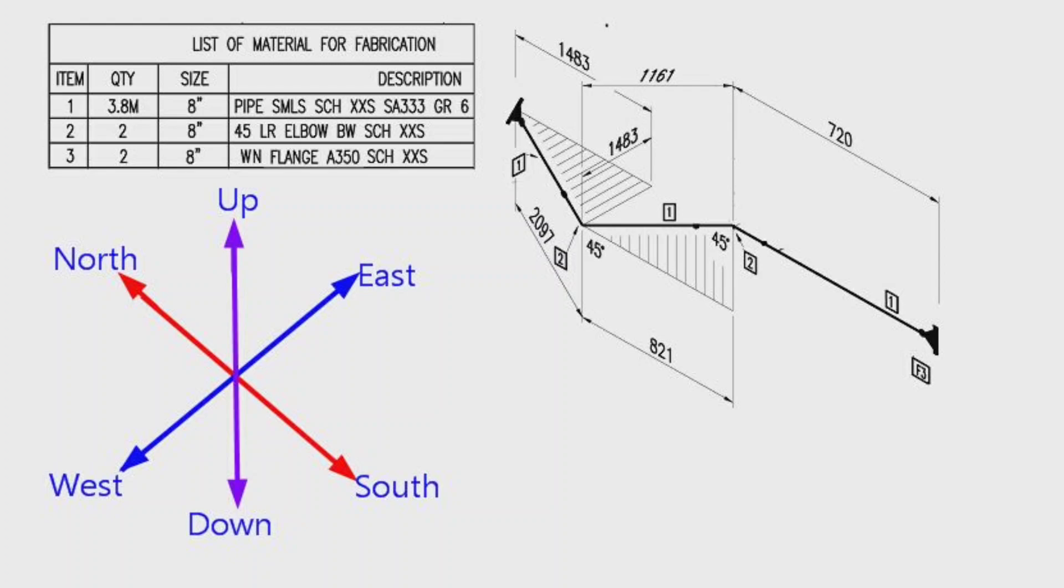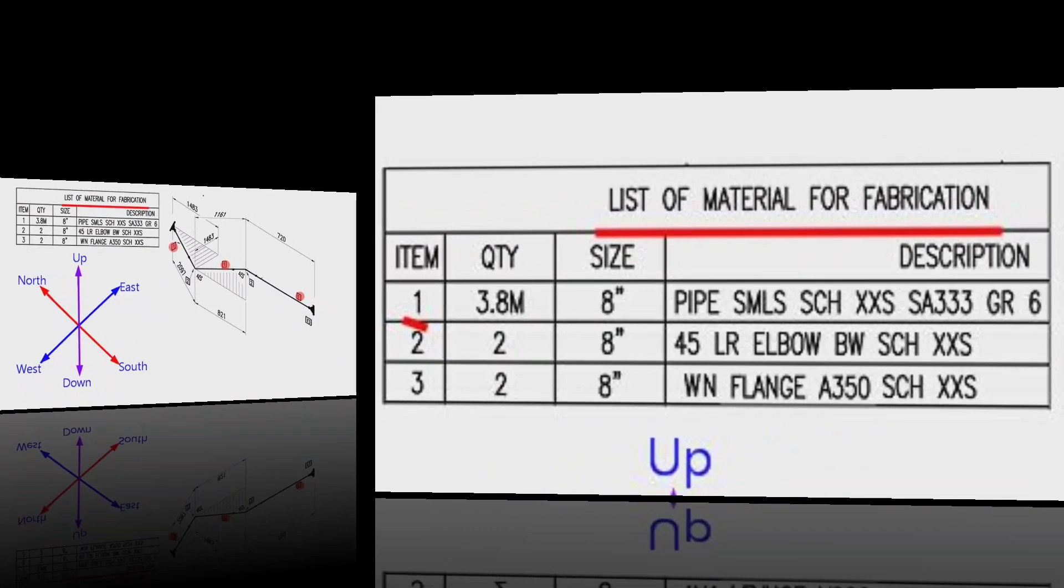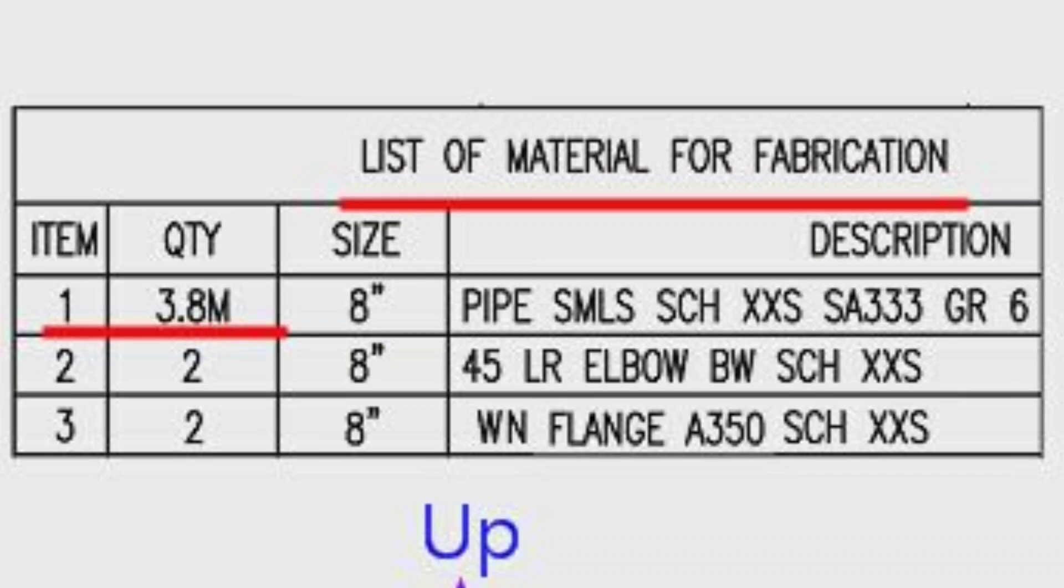Let's learn the materials which used in the pipeline. This is the list of materials for fabrication. Detail number 1 shows pipe, was used in several places in the pipe drawing. Let's look at the material list. The detail number 1: 3.8 meters length, 8 inches pipe, seamless, schedule is XXS, SA333 grade 6.